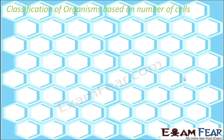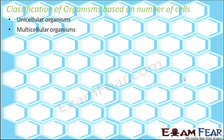We will look at the classification of organisms based on the number of cells. How many cells are present inside the body of a living organism? Based on the number of cells present in a living organism, organisms are divided into two categories: unicellular organisms and multicellular organisms.